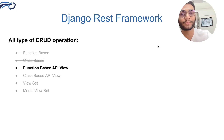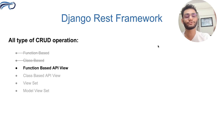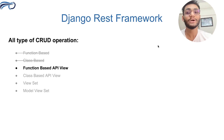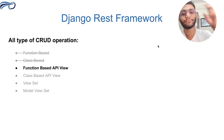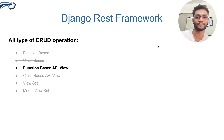Till now we have seen two types of CRUD operations: we have already built the function-based CRUD operation and the class-based CRUD operation. In today's video, we are going to build the third type, which is the function-based API view CRUD operation.